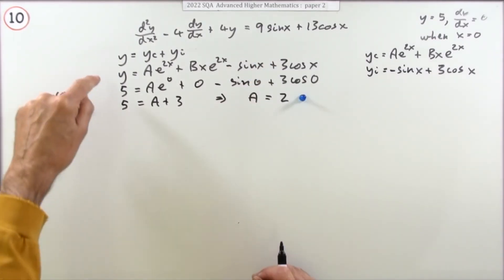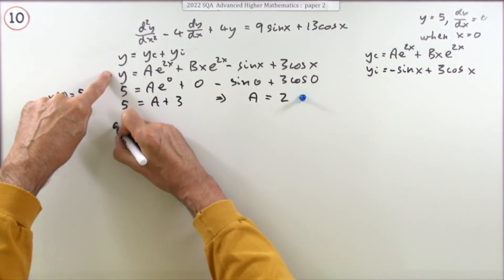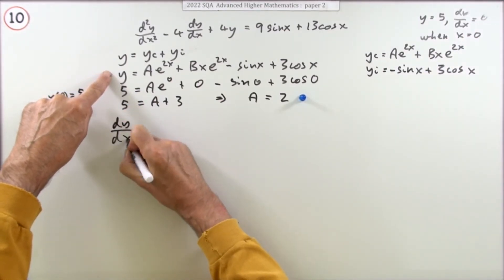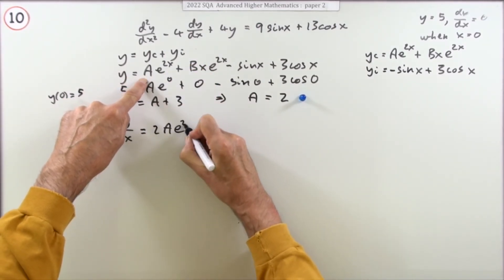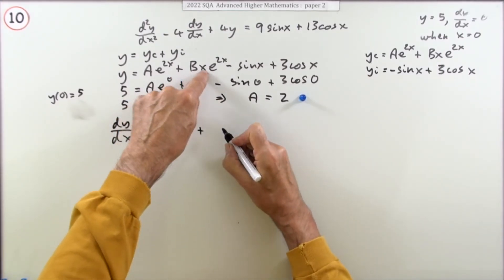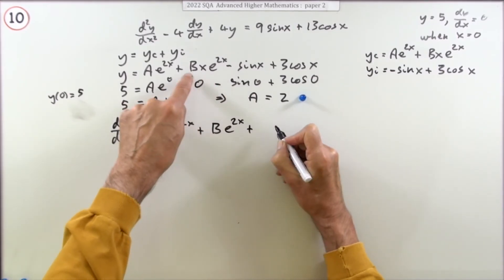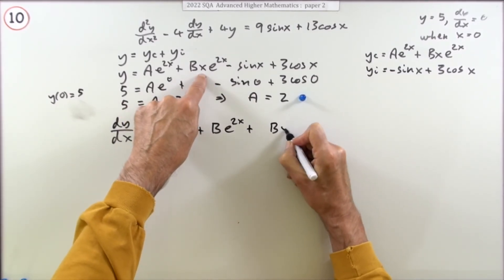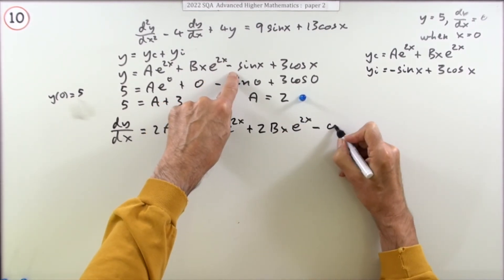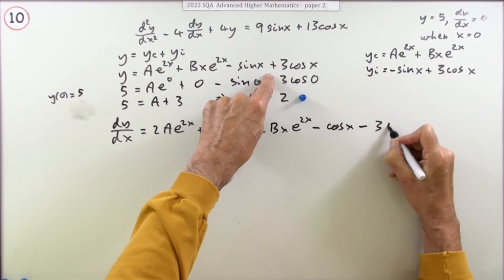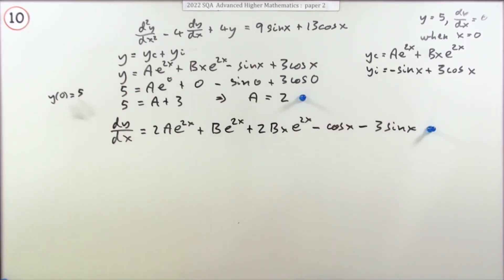To use the second initial condition, differentiate the general solution: dy/dx = 2Ae^(2x) + B·e^(2x) + 2Bx·e^(2x) − cos(x) − 3sin(x). Writing down that derivative correctly gets a mark.